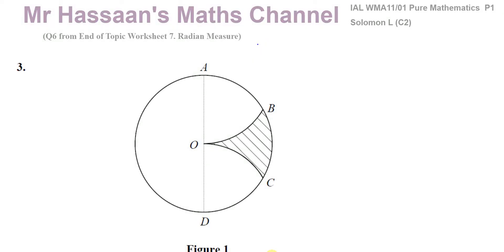Welcome back to Mr. Hassan's Math Channel. This is a question from my end-of-topic worksheet from P1, Chapter 7, Radian Measure. It's from the old Solomon papers — specifically from C2, because previously the old C1 didn't have radian measure; it used to be in C2, and now it's moved to the new P1.